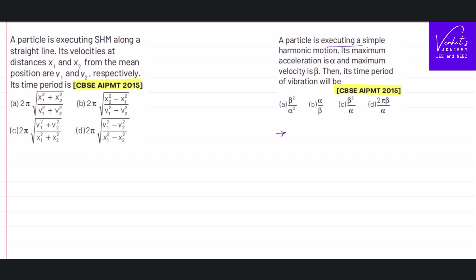A particle is executing simple harmonic motion. Its maximum acceleration is alpha. First, we need to know the equation for acceleration in SHM: a = −ω²y, so the magnitude is ω²y. Maximum acceleration occurs when displacement equals amplitude, and that value is called alpha. Maximum velocity is called beta. We recall the equation for velocity in SHM.